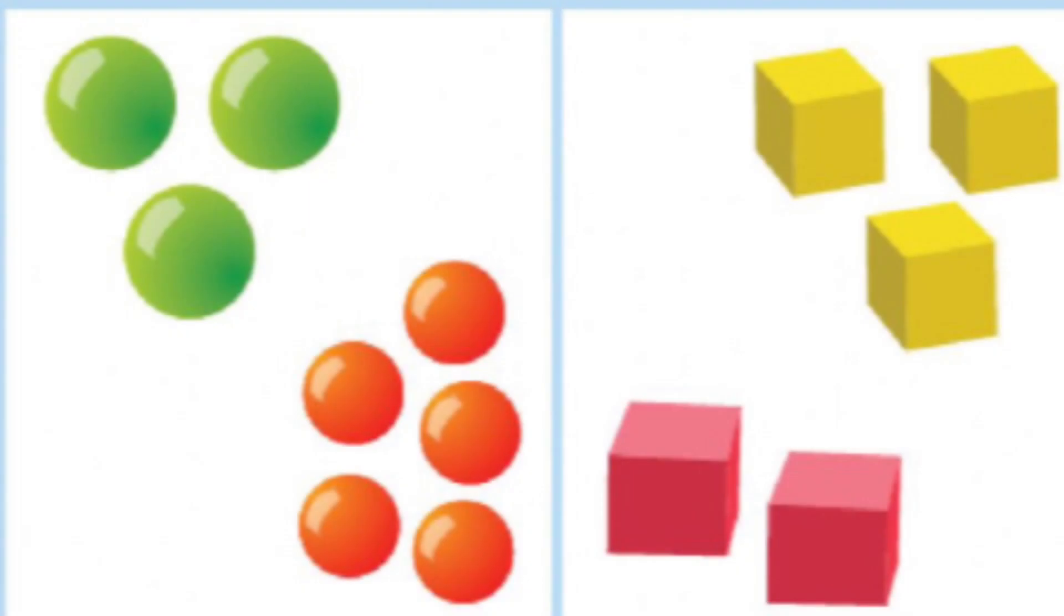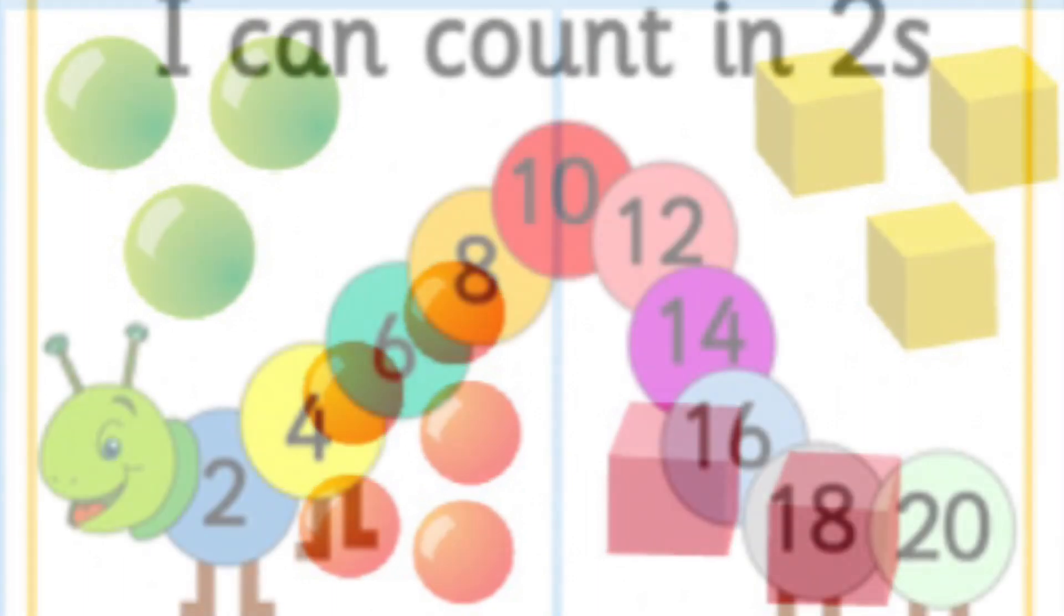So let's get those brains warmed up again today. For your first activity, you'll see two groups of objects. All you've got to do is put a circle around the group that has more in it. Think about which is the biggest group; that will help you know which has more.